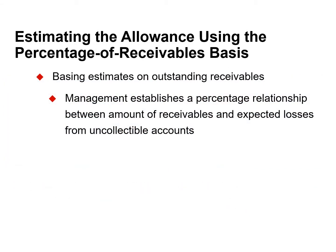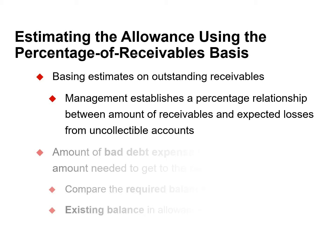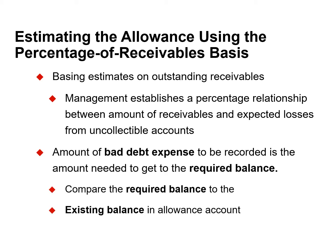The percentage of receivables estimates the allowance as a percentage of the outstanding receivables. This method relies on the fact that as accounts receivable become older and more overdue, it is less likely that they will be collected. Management establishes a percentage relationship between the amount of the receivables and the expected loss from uncollectible accounts. The amount of bad debt expense that should be recorded is the amount needed to get to the required or target balance.